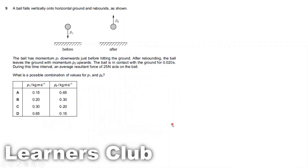Question 9. A ball falls vertically onto horizontal ground and rebounds. The ball has momentum p1 downwards just before hitting the ground. After rebounding, the ball leaves the ground with momentum p2 upwards. The ball is in contact with the ground for 0.020 seconds. During this time, an average resultant force of 25 N acts on the ball. What is the possible combination of values for p1 and p2?